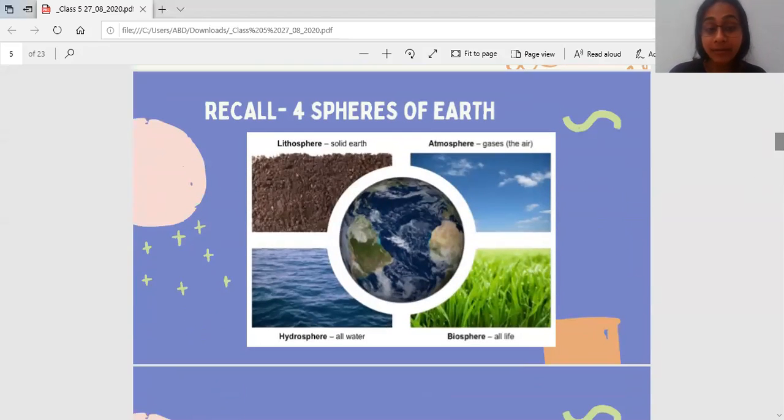So, we have studied about the four spheres of earth. We have studied a lithosphere and a hydrosphere. Lithosphere means solid earth. Hydrosphere means all water bodies. Whatever the water is on the earth, all of them together is called hydrosphere.